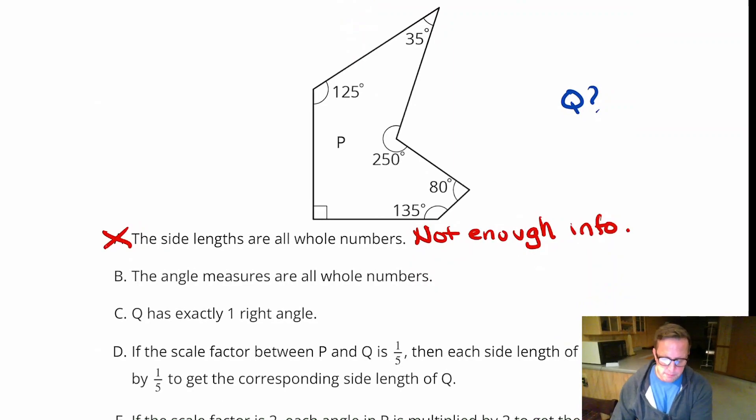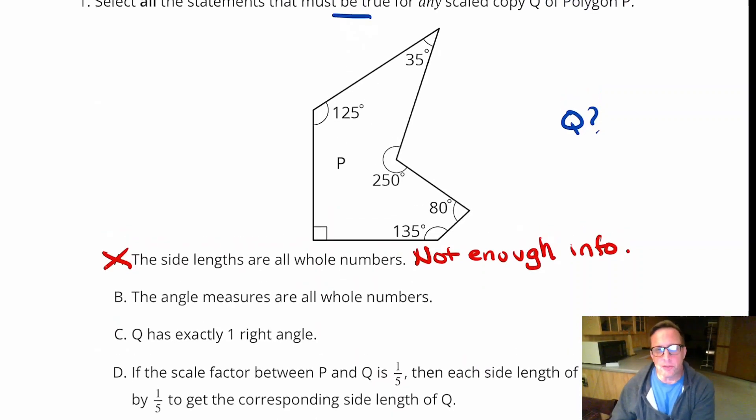For B, the angle measurements are all whole numbers. Whole numbers means it's not a decimal, not a fraction. So all the angles, now all the angles, if you're doing a scale, the angles do not change. Whether you're scaling up or scaling down, they are always going to stay the same.